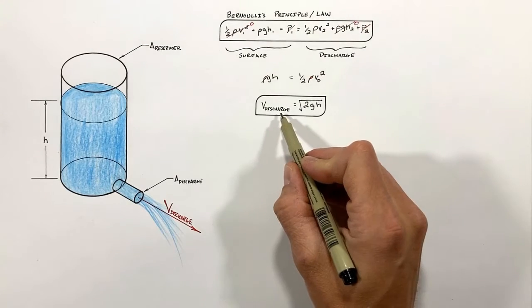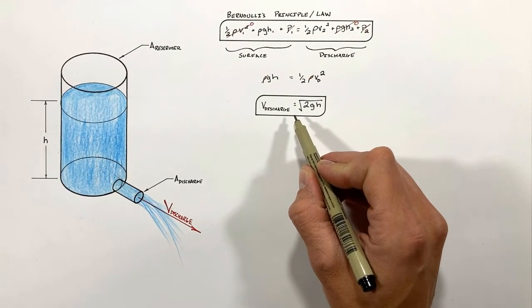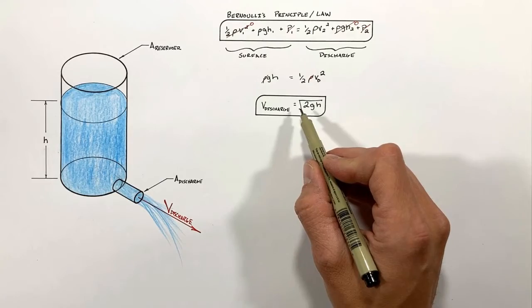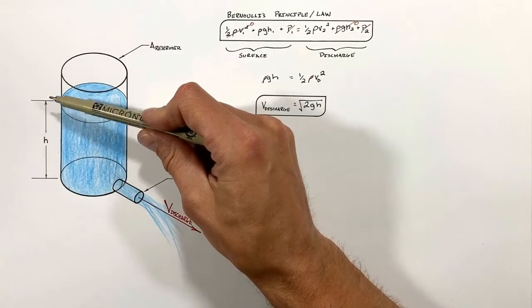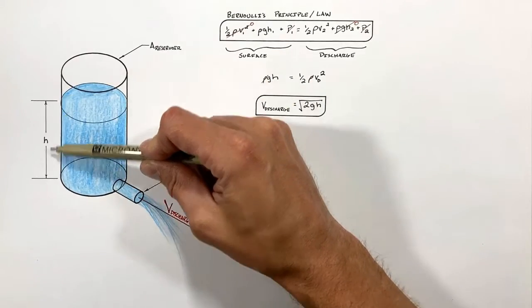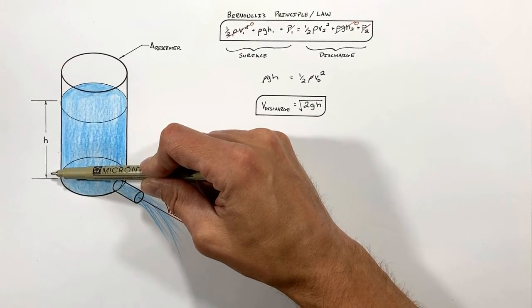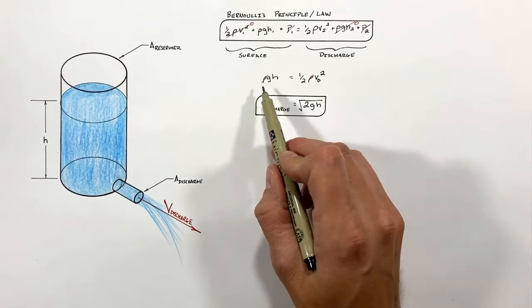We find the velocity at the discharge is equal to the square root of 2gh. Now there's a few big points I want to make about this result. The first being that the result is the same result we would get if we were to simply drop the fluid from the surface of the fluid here downward this height h in free fall. And the importance of that can't be oversold. See, all that's really happening here is just the conversion of potential to kinetic energy.